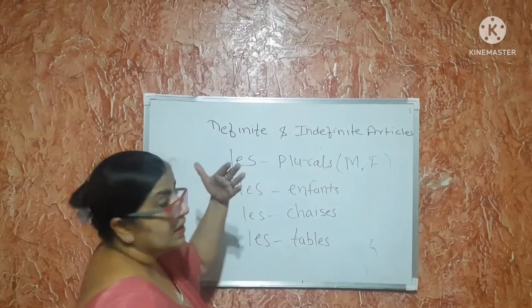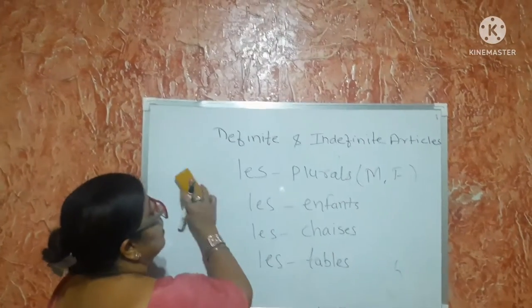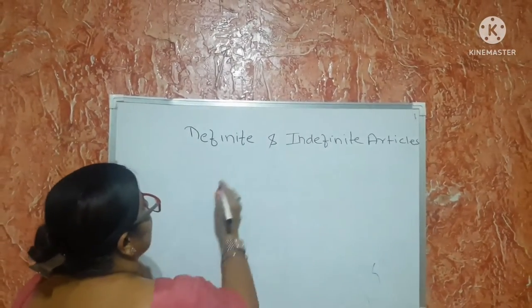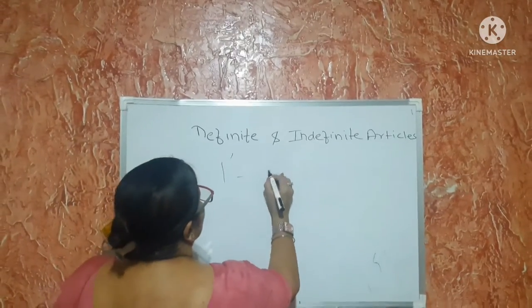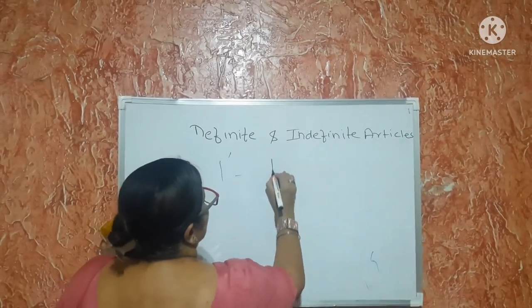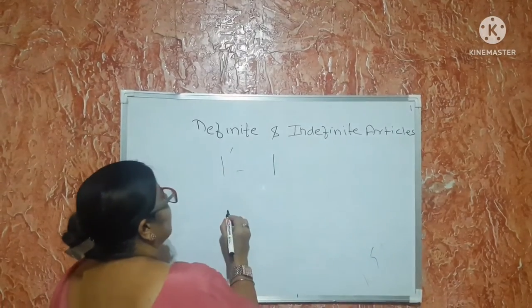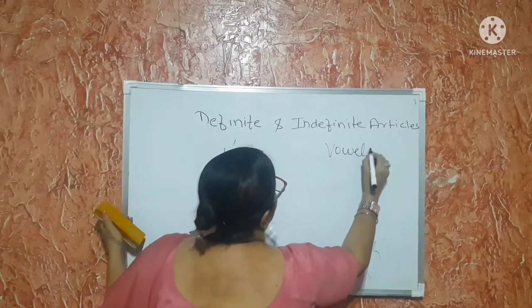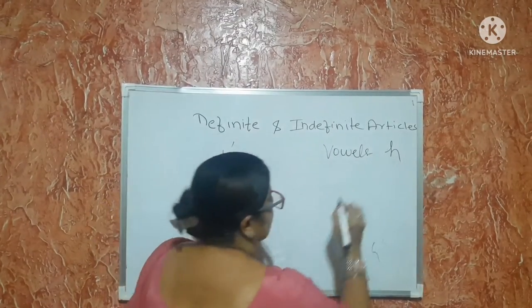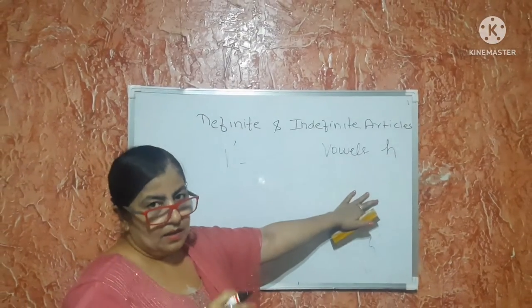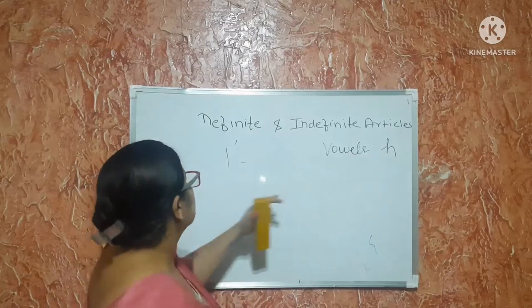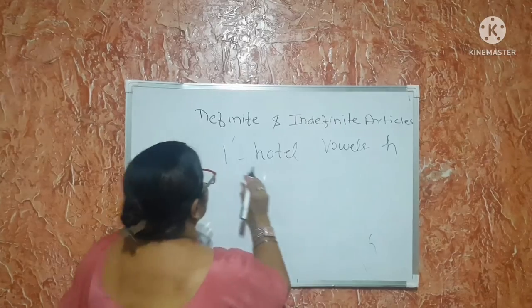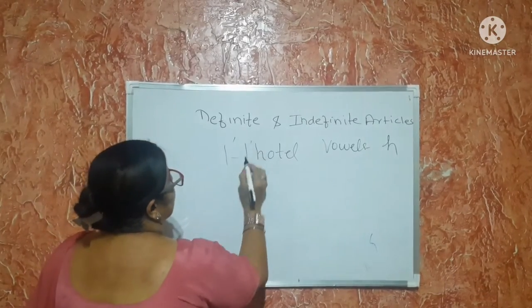Is it clear so far? The last form in the definite article is l'apostrophe. L'apostrophe is used with vowels A, I, E, O, U, as well as with the letter H, because the H sound is mute in French. For example, we write 'l'hôtel' — which means hotel, pronouncing it as l'hôtel.